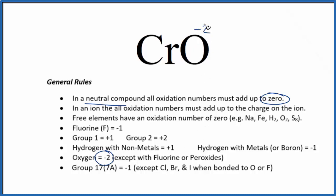If we know the oxygen's negative 2, everything adds up to zero. The chromium has to be positive 2. And that's why we call this chromium 2 oxide, the oxidation number of positive 2.